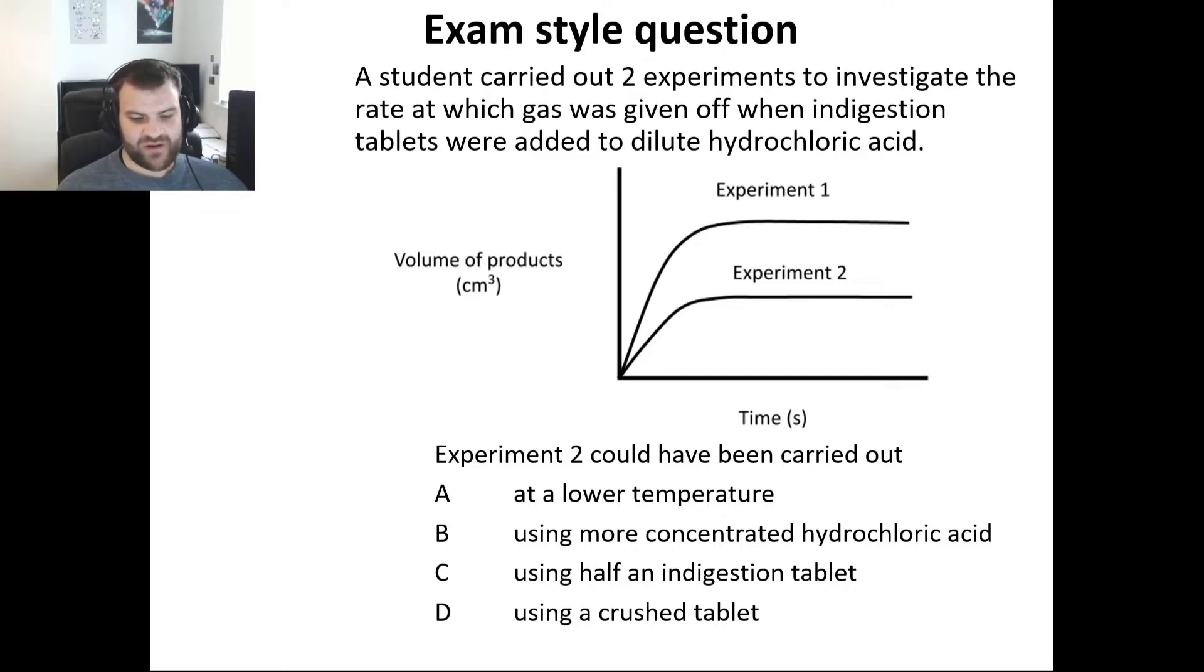First one, if we have a lower temperature we'd have a slower rate which is what we seem to have in experiment two. However, we would have ended up with the same quantity of product being formed and we don't have that, so A cannot be correct. If we used a more concentrated hydrochloric acid, the reaction would go faster not slower, that's that one away. If we use half of an indigestion tablet we will end up making half of the volume of the products, making that one look like the correct answer. If we used a crushed tablet it would make it go faster, the graph would be steeper which is not, therefore the correct answer is C.